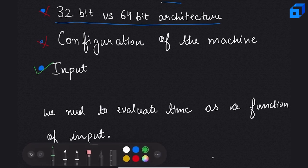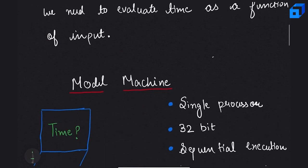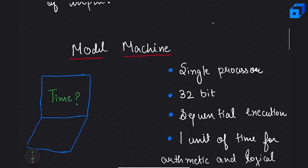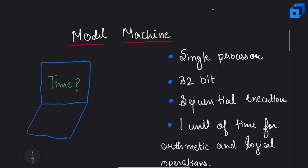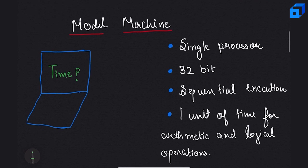To make it simple, let's create a model machine. This model machine has a single processor, is based on 32-bit architecture, and instructions flow sequentially. This machine takes one unit of time for arithmetic and logical operations, where arithmetic operations include addition, multiplication, and division, and logical operations include AND, OR, and XOR.